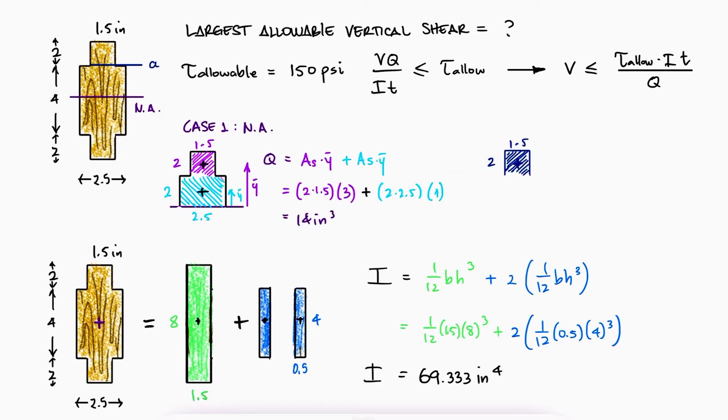For case 2, it would only be the area and the distance to its centroid from the neutral axis for only the one shape. And finally, the thickness t would be 2.5 for case 1 and 1.5 for case 2.